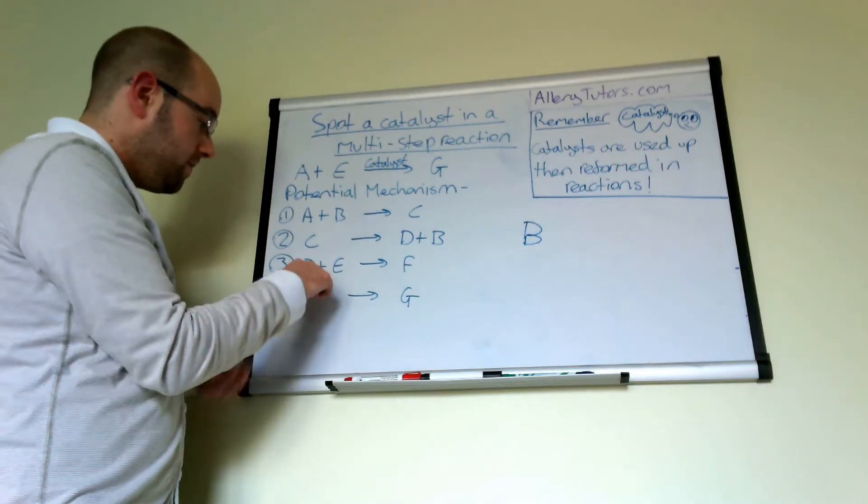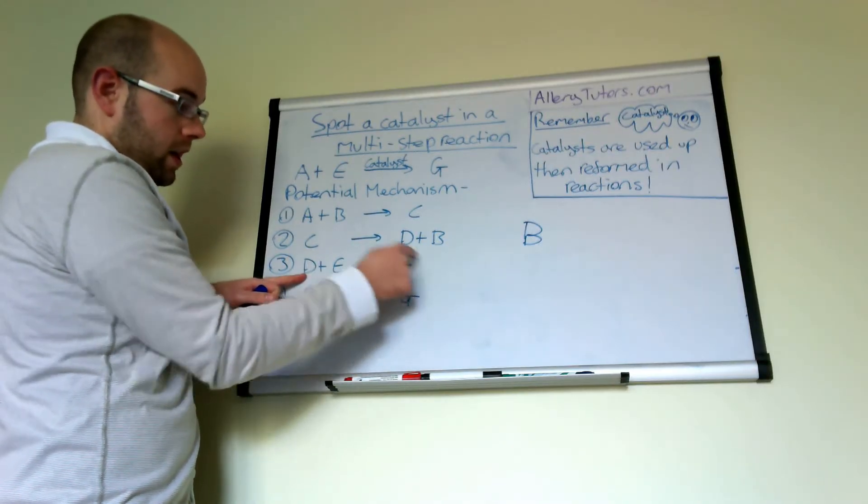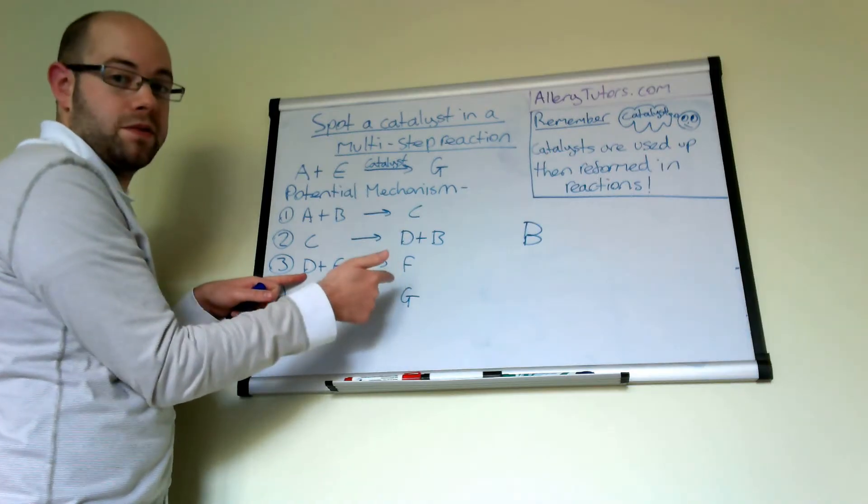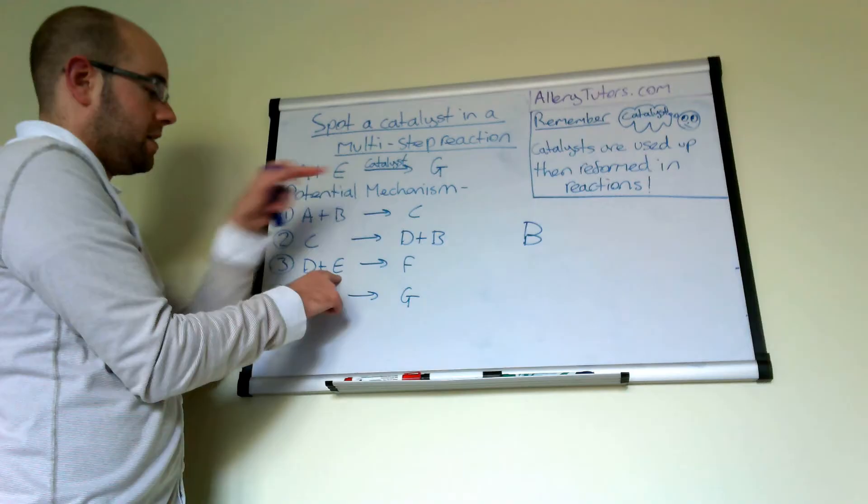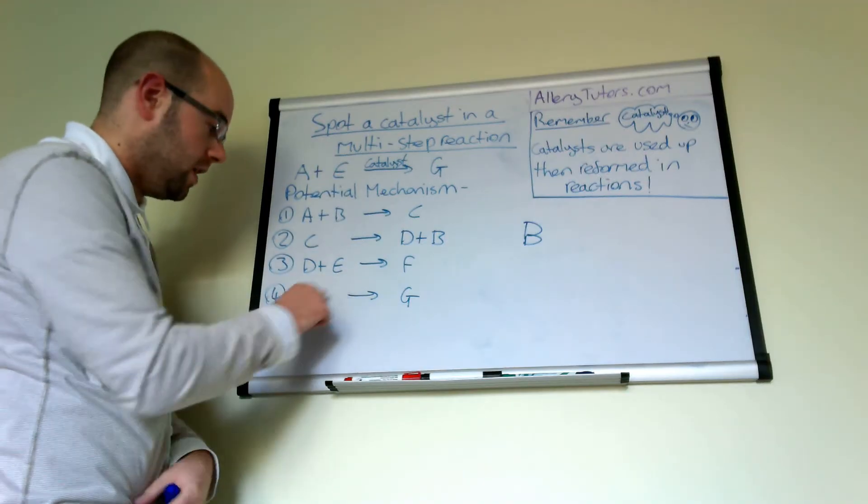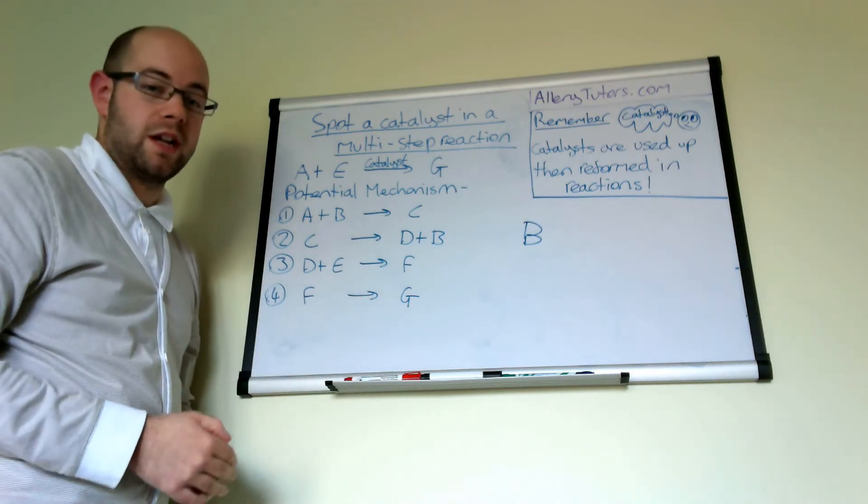We'll go on to D, so here's D. So D's reacting. Again, it doesn't form as a product lower down afterwards, so D can't be the catalyst. E is one of the reactants, so that definitely can't be the catalyst. And F looks likely to be an intermediate because it's not reformed towards the end.